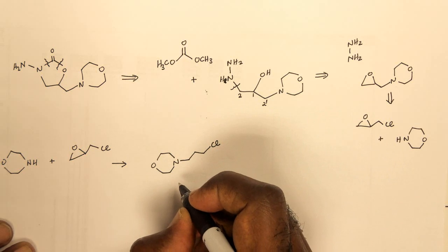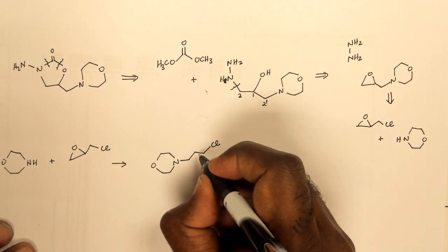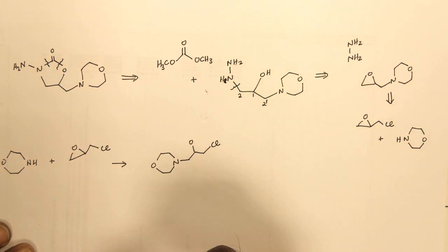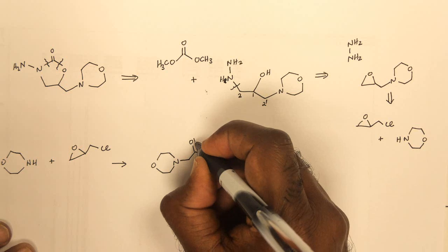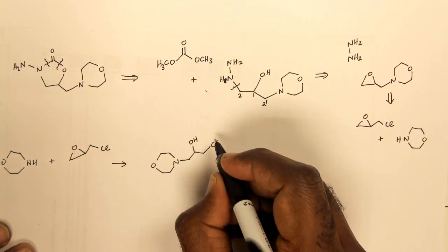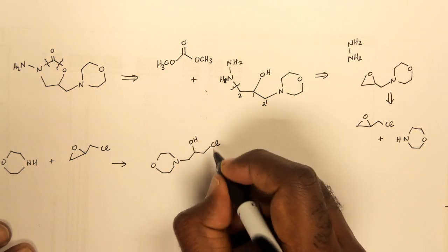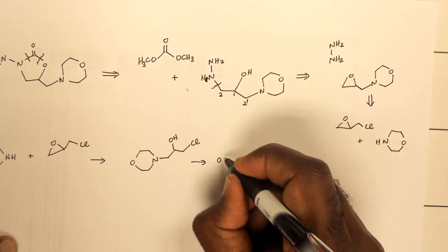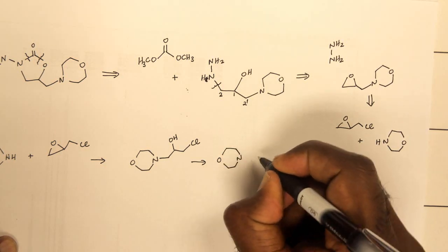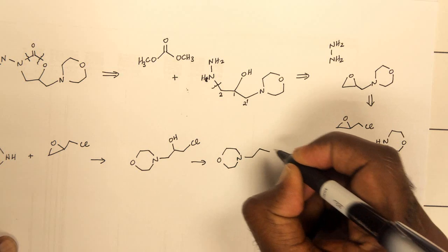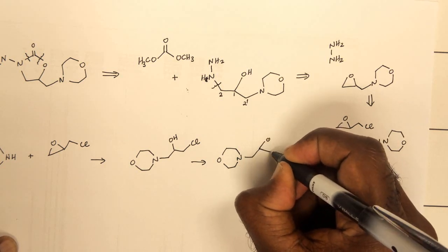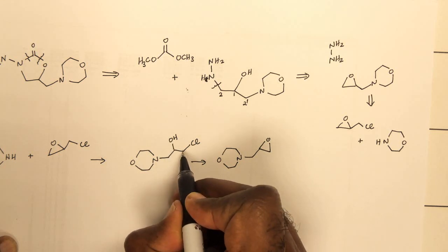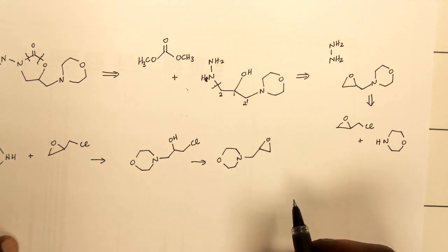Which would mean an oxygen at the central carbon. That would probably cyclize again to give you the epoxide moiety again. Remember that this oxygen would react with that carbon and exclude that chlorine atom.